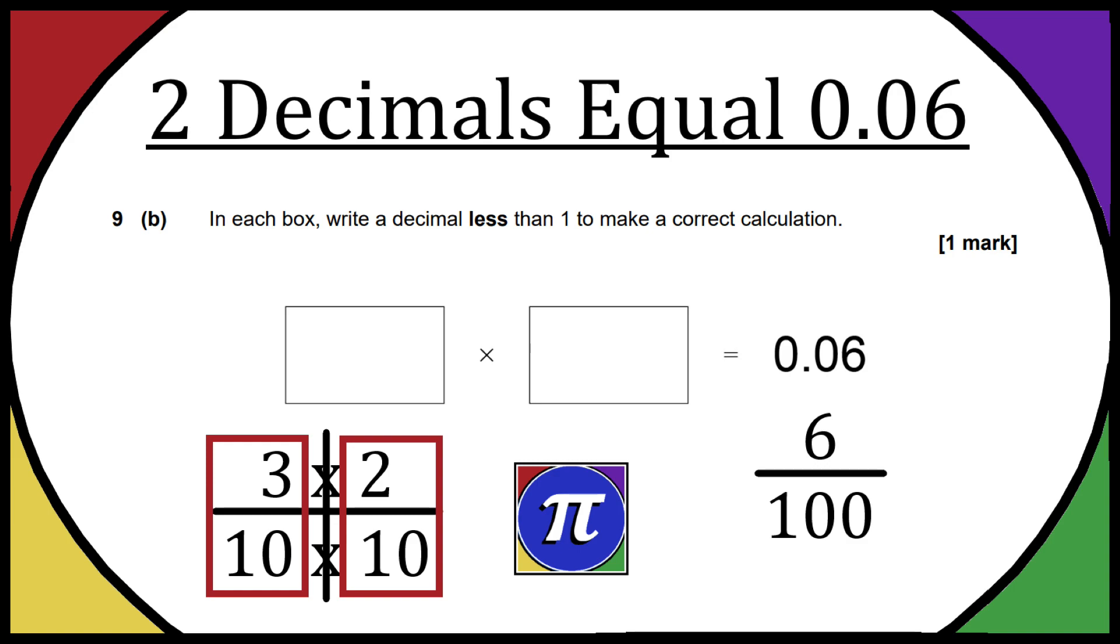So for me, I just converted these fractions into decimals, which is quite easy. 3 over 10 is 0.3, and then 2 over 10 is 0.2.